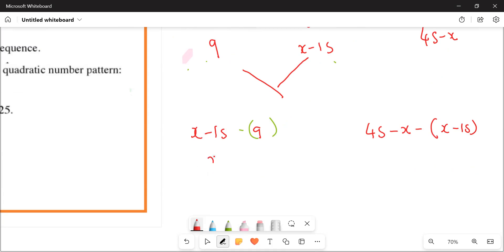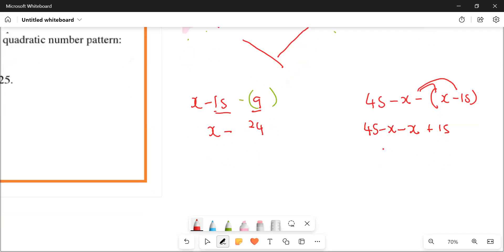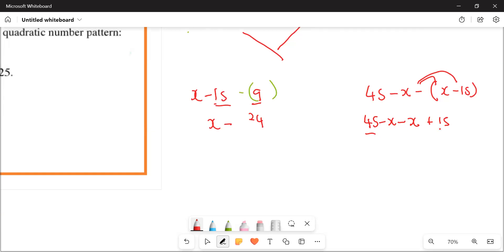And then from here onwards, you can simplify this. If you simplify this, what are you going to have? x minus 24. Because this one and this one, they are like terms. 45 minus x, negative and positive, minus x, negative and positive, plus 15. And then what are you going to get for this? This one and this one, they are going to give you what? It's 60 minus 2x.